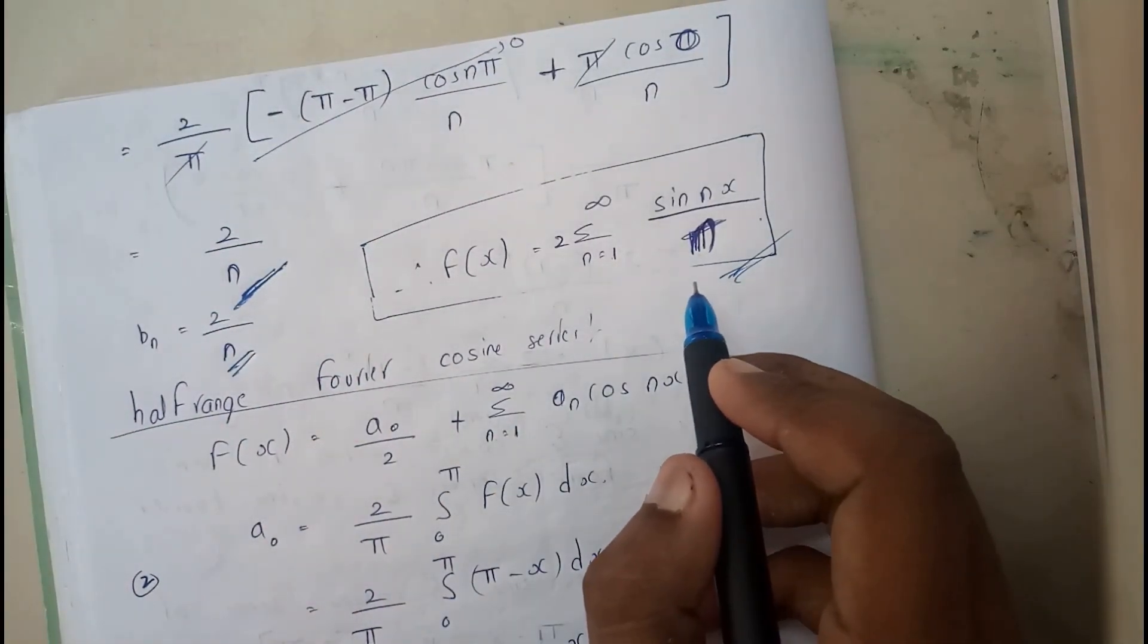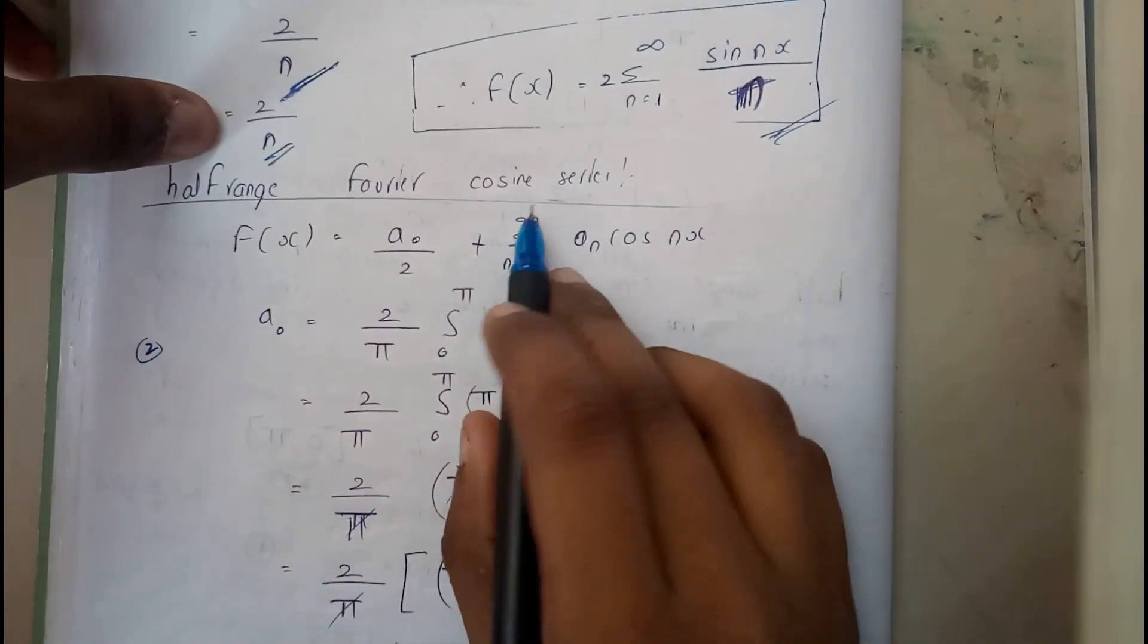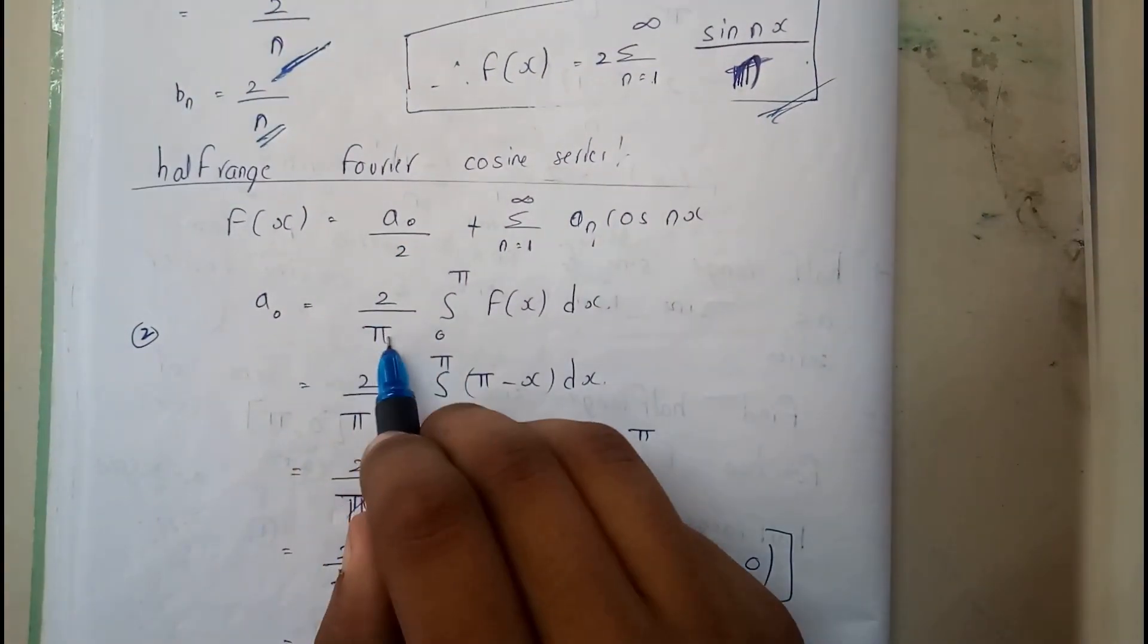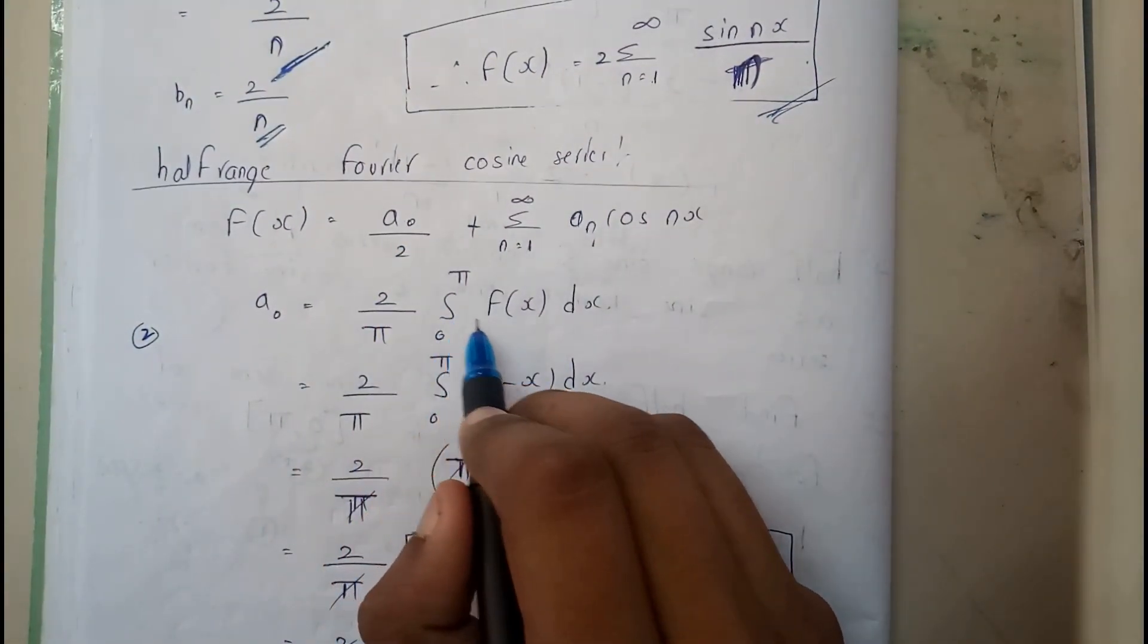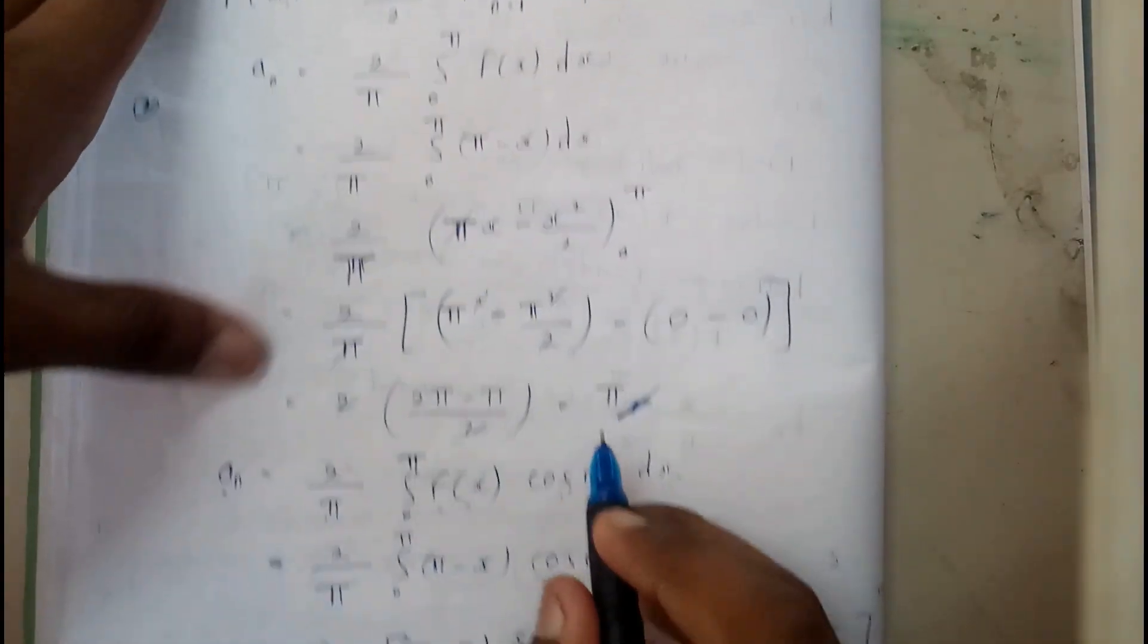Now let us go through half range cosine series. Cosine is an even function, so it will be having a₀ and aₙ. So a₀ = (2/π) ∫₀^π f(x) dx. We substituted π - x, we solved it, so that we got π.